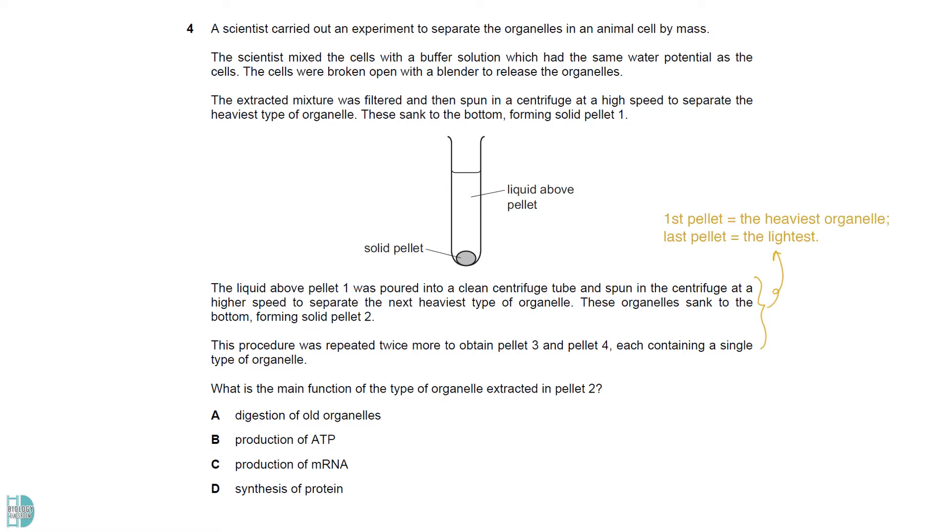The first pellet to form is made up of the heaviest organelle, followed by 2, 3, and 4. So, pellet 2 is the second heaviest organelle in the animal cell. Now, let's identify the organelle in the option. A describes lysosomes, which contain hydrolytic enzymes to digest all organelles. B is the mitochondria. C is the nucleus where transcription occurs. D is ribosomes. The mitochondrion is the second heaviest organelle, only lighter than the nucleus.